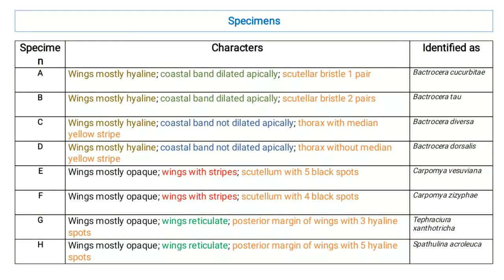We had eight specimens of fruit flies and identified them based on these characteristics. Specimen A had wings mostly hyaline, coastal band apically dilated, and scutellum consisting of one pair of bristles — identified as Bactrocera cucurbitae. Specimen B had wings mostly hyaline, coastal band apically dilated, and scutellum with two pairs of bristles — identified as Bactrocera tau.